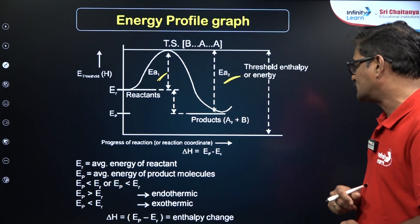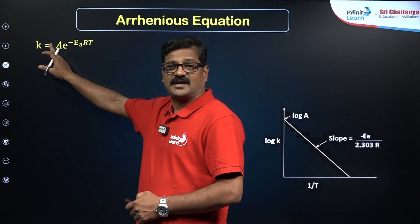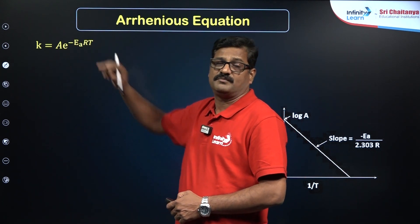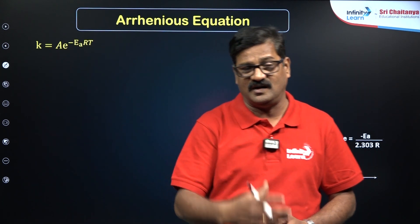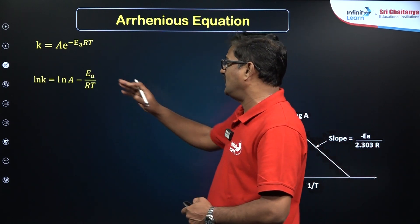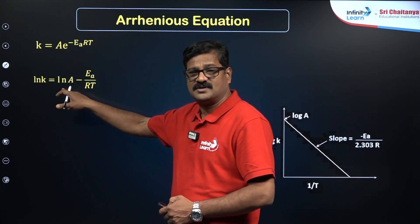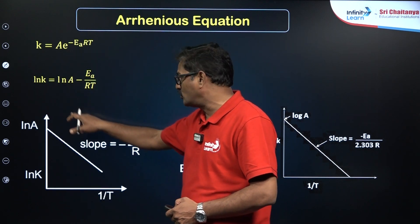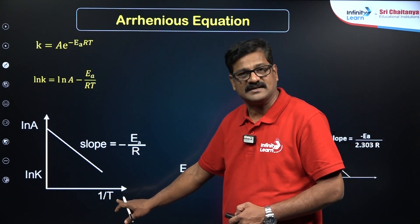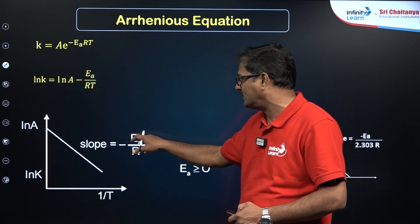The Arrhenius equation states: k = A · e^(−Ea/RT), where A is the Arrhenius constant, Ea is activation energy, R is the gas constant, and T is temperature. Taking natural log: ln k = ln A − Ea/RT. This is of the form y = mx − c, so a plot of ln k versus 1/T is a straight line with negative slope equal to −Ea/R.